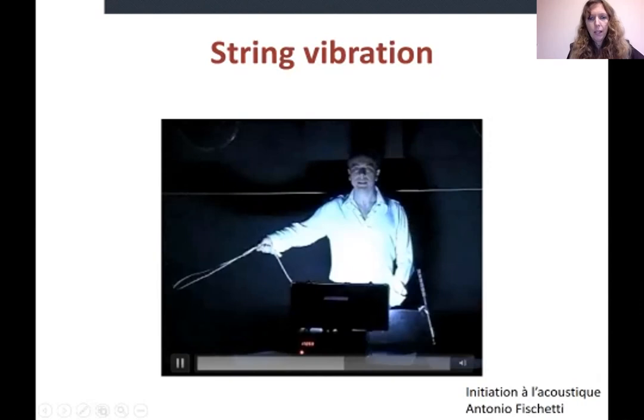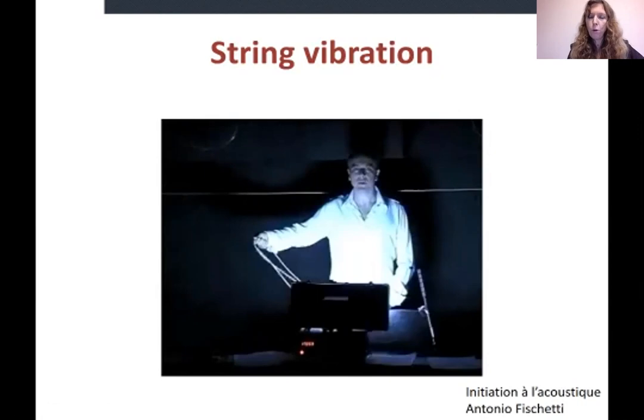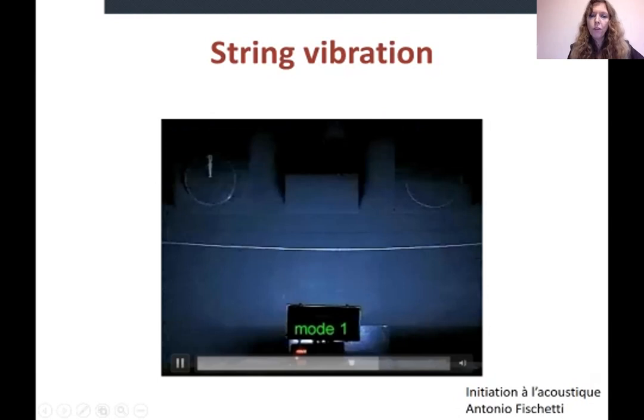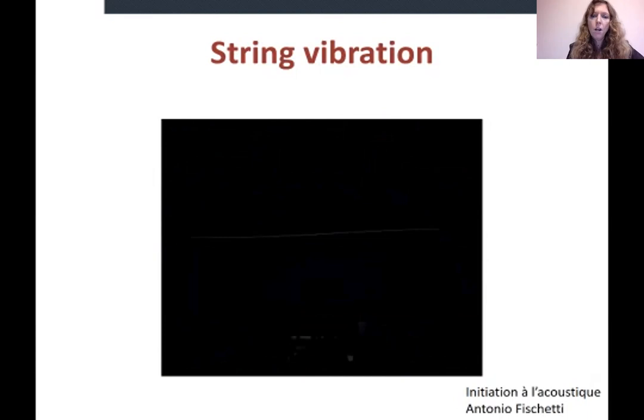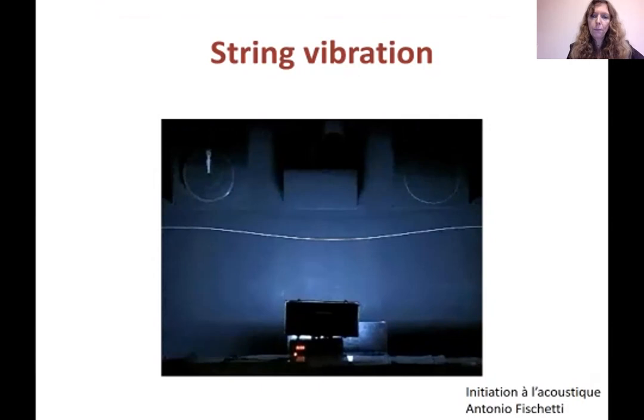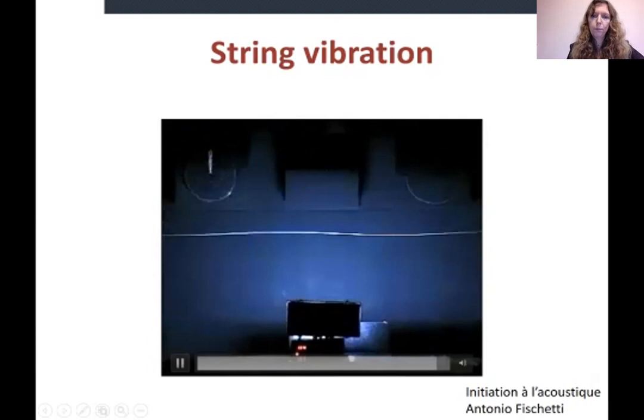Another way to look at this is to use a stroboscope. With a stroboscope set at a certain frequency, you can actually see different positions of the string during one cycle of vibration — how the string is moving within the envelope you saw earlier. This was for mode one, now mode two, then mode three, then mode four.